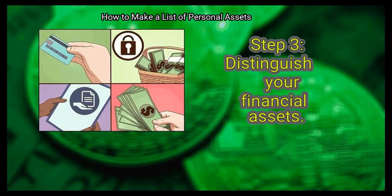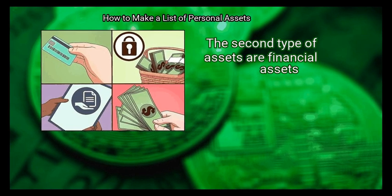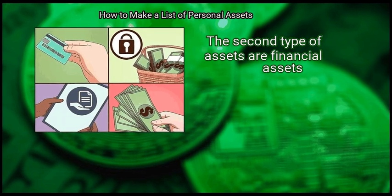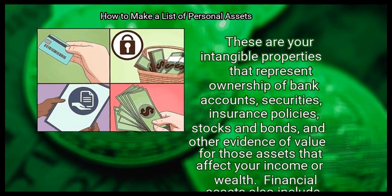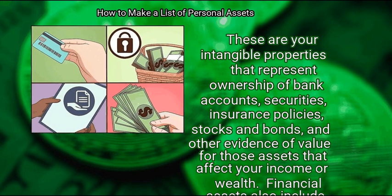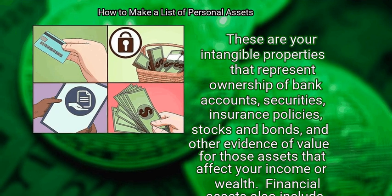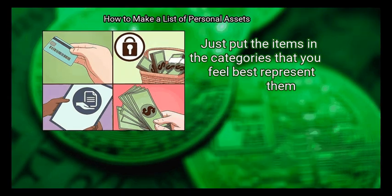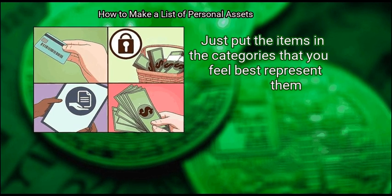Step 3: Distinguish your financial assets. The second type of assets are financial assets. These are your intangible properties that represent ownership of bank accounts, securities, insurance policies, stocks and bonds, and other evidence of value that affect your income or wealth. Financial assets also include home, car, and personal loans, retirement and investment accounts, and credit cards. Don't worry about making a strict distinction between the two categories — just put the items in the categories that best represent them.